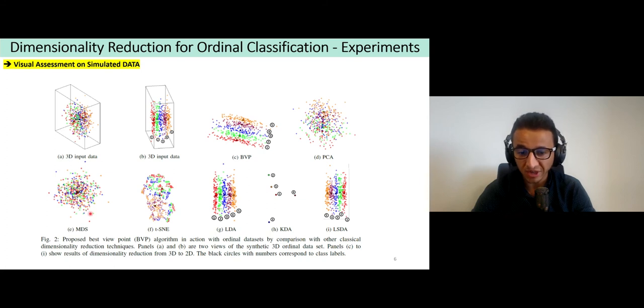If we look at other dimension reduction techniques like MDS, t-SNE, LDA, LSDA, we can see that LDA and LSDA succeed at preserving ordinality while t-SNE and MDS fail. MDS fails because it projects from n to n minus one by computing the pairwise distance between instances, and here we have some instances that are near to each other and they do not belong to the same class, so this is why we obtain this noisy structure.